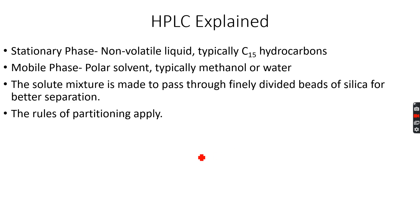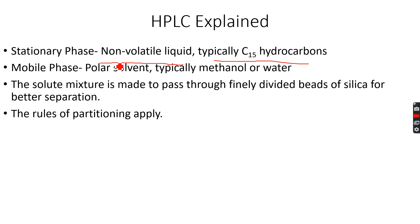Now let's get to the chemistry of HPLC. The stationary phase is a non-volatile, non-polar liquid — typically C15 hydrocarbons, so something very close to diesel oil. This makes it a good stationary phase because it is non-polar and has a long carbon chain.